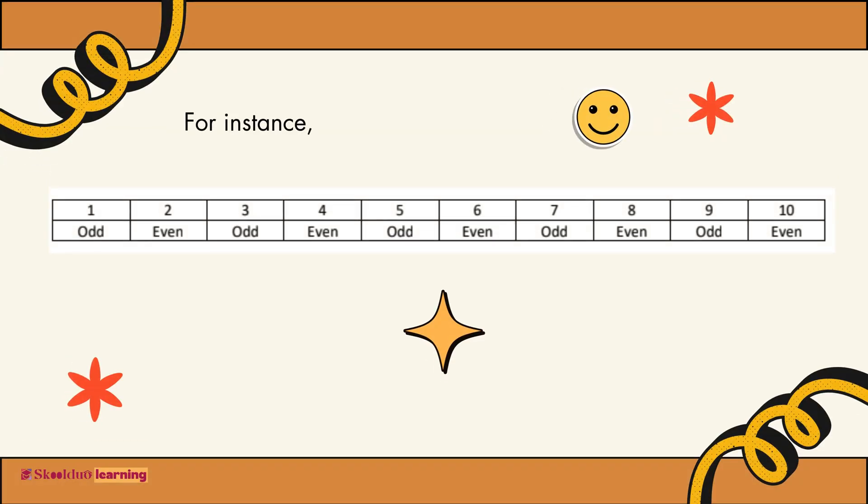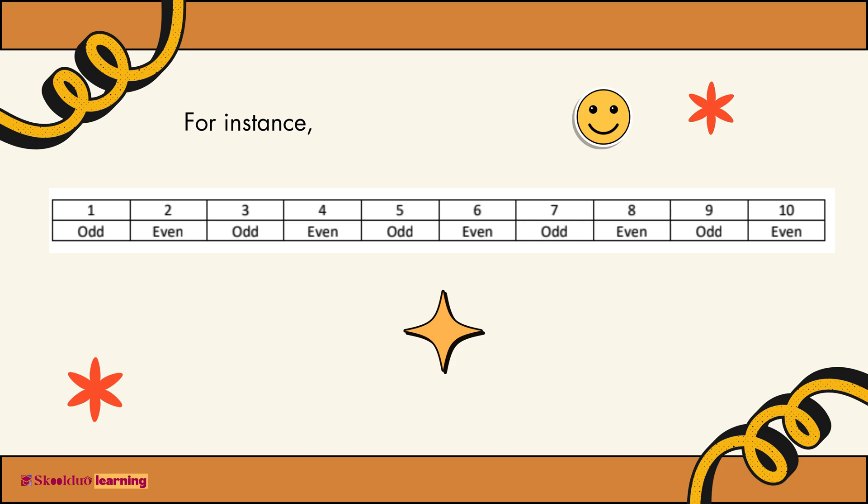For instance, 1 is odd, 2 is even, 3 is odd, 4 is even, 5 is odd, 6 is even, 7 is odd, 8 is even, 9 is odd, and 10 is even.